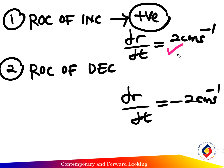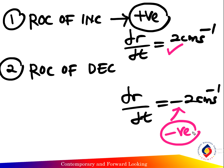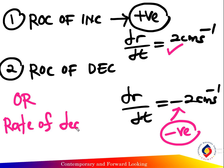If the question asks to find the rate of decrease of the radius, then the final answer is dr over dt equals negative 2 cm per second. You put the negative sign. The rate of decrease of the radius equals 2 cm per second.